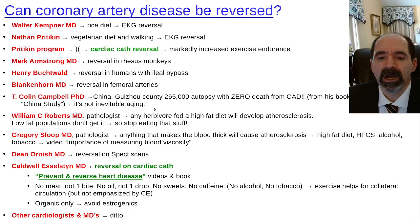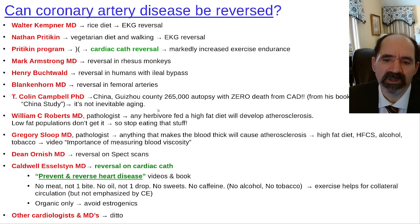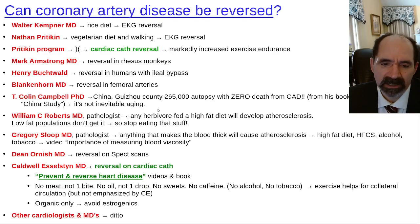Dean Ornish showed reversal of coronary artery atherosclerosis on SPECT scans, where heart perfusion improved after patients were put on a vegetarian diet. Caldwell Esselstyn then wrote the classic book on reversal of coronary artery disease called 'Prevent and Reverse Heart Disease.' You don't need to buy the book — just watch his videos. He's got lots of videos online.